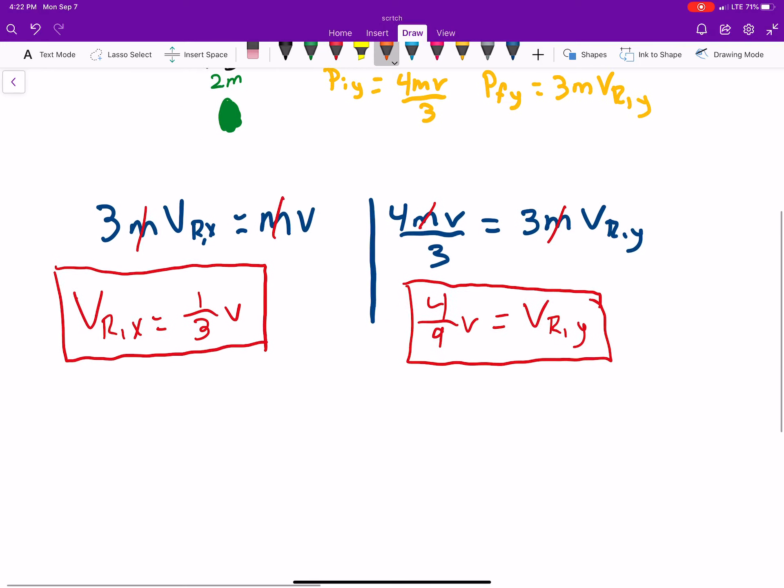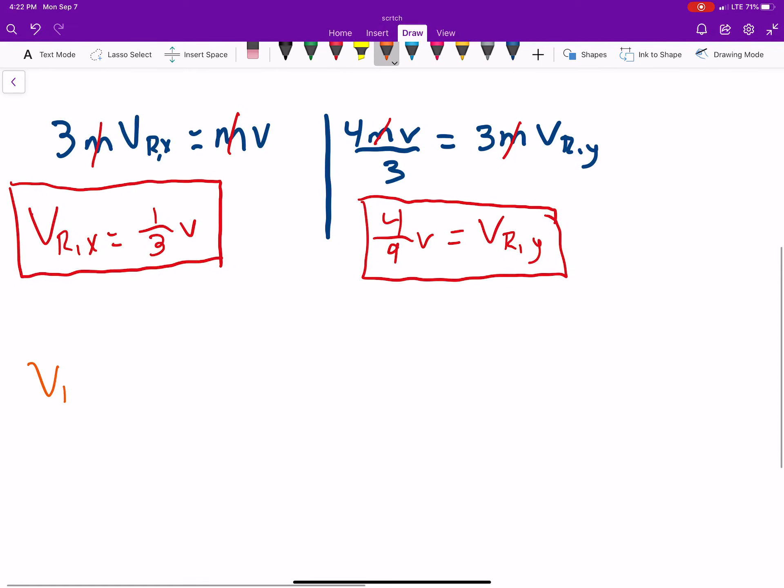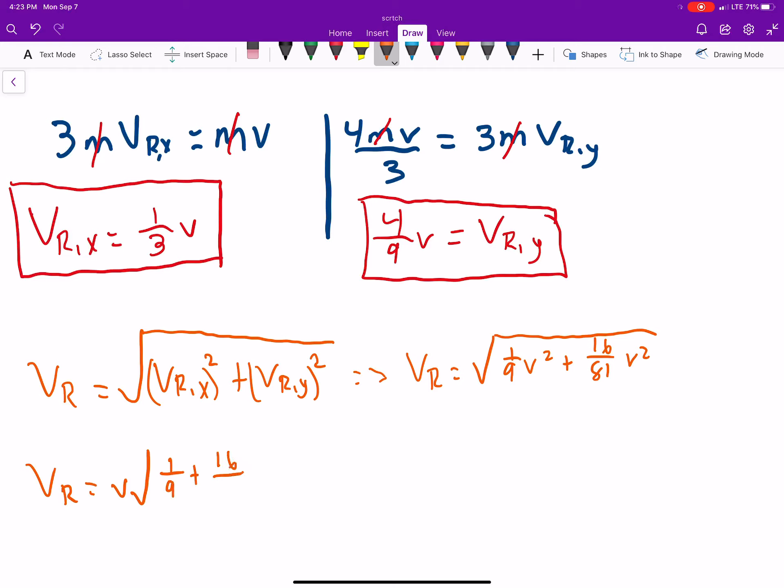Now we can use the fact that your velocity resultant is going to be the square root of vrx squared plus vry squared to find the velocity. You will get the square root of 1/9 v squared plus 16 over 81 v squared. You could factor out a v, and you'll get v times the square root of 1/9 plus 16 over 81.